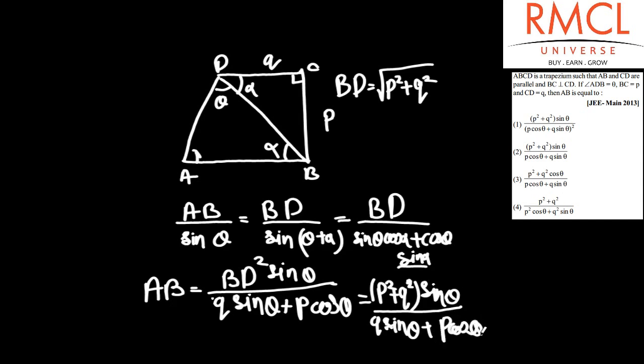So the answer is B squared plus Q squared times sin theta over Q sin theta plus B cos theta. The answer is option number 2.